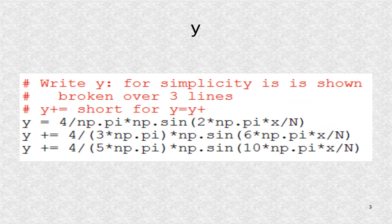Next, the output array y is determined. It is the sum of three sine functions at three different frequencies. These are array functions — since x as input is an array, numpy knows the output will be an array of the same size. These are called element-wise operations.